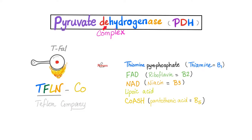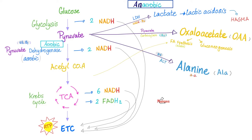Recall from my video on pyruvate dehydrogenase complex that this enzyme complex is made of five enzymes and needs five coenzymes. Mnemonic: Teflon Company. T is Thiamine from vitamin B1. F is FAD from vitamin B2. N is NAD from vitamin B3. L is lipoic acid. And Co is CoA from vitamin B5. So anytime this patient eats glucose, we go to pyruvate and then we're stuck — we cannot continue, which means more lactic acidosis. That's not good.